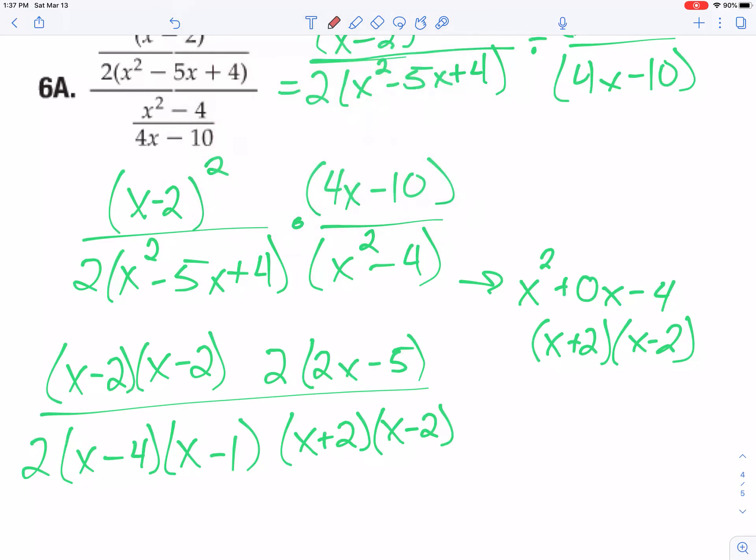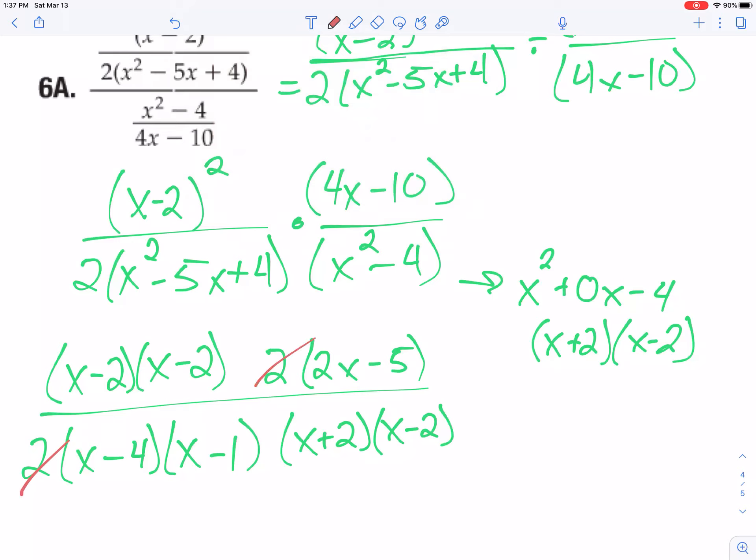So now I can start canceling things, yippee-ki-yay, goodbye 2's, goodbye x minus 2. Notice I only cancel one and one though, you can only cancel one at a time. And it doesn't look like anything else cancels.